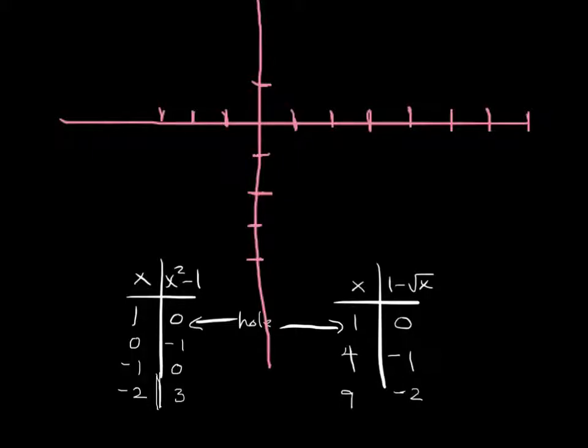We'll do the one on the left first. When x is 1, x squared minus 1 is 0, and of course, that's a hole. When x is 0, it's negative 1. When x is negative 1, 0. And when x is negative 2, it's 3, which we'll guess, it's sort of up there.